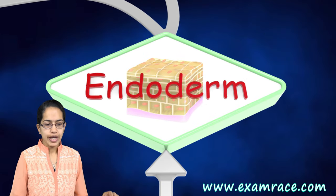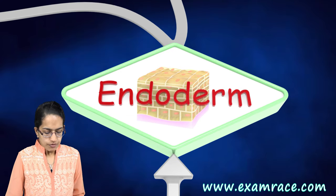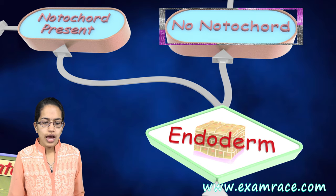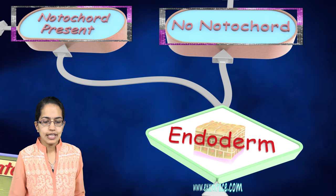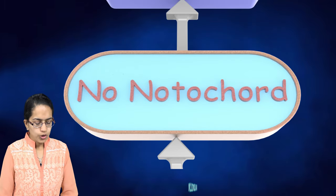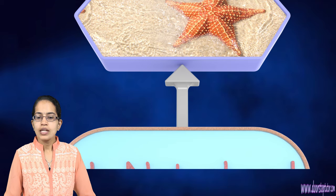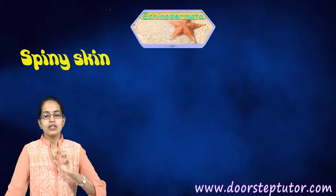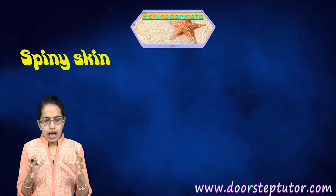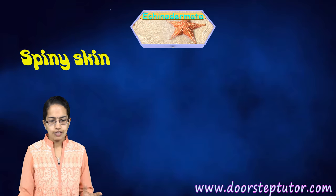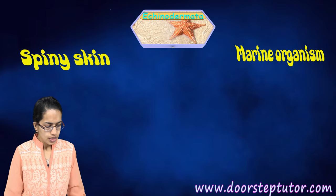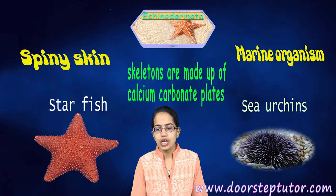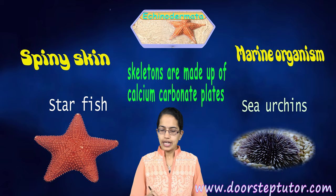Coming to those where the cavity is pinched from the endoderm, we can further classify these as those without a notochord and those with a notochord. Without a notochord, a good example is Echinodermata — 'echino' means spiny skin. These are free-living marine organisms, mostly found in water, and their skeleton is made up of calcium carbonate. Starfish and sea urchin are good examples of Echinodermata.